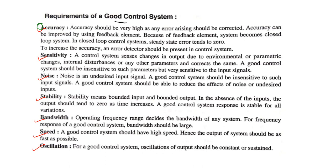Fifth, bandwidth — the operating frequency range decides the bandwidth of the system. For a good control system, bandwidth should be large. If the bandwidth is large, the frequency range is large and our response is very good.